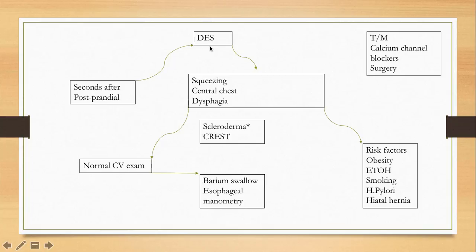An important association: patients with scleroderma or systemic sclerosis can develop diffuse esophageal spasm. Scleroderma presents as a constellation of symptoms known as CREST: Calcinosis, Raynaud's phenomenon — with extreme bluish discoloration of the extremities — Esophageal spasm, Systemic sclerosis, and Telangiectasias on the skin. There are skin findings, extremity findings, esophageal findings, and calcinosis of the skin.